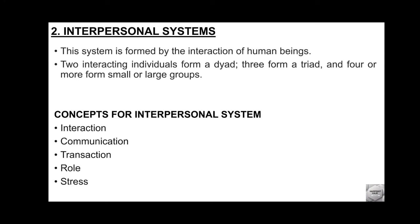Interpersonal systems — this system is formed by the interaction of human beings. Interpersonal ka matlab hi interaction hai. Agar do log interact karte hain to dyad, teen karte hain to triad, aur chaar ya zyada hain to small or large groups. Interpersonal system ke concepts hain: interaction, transaction, role, and stress.